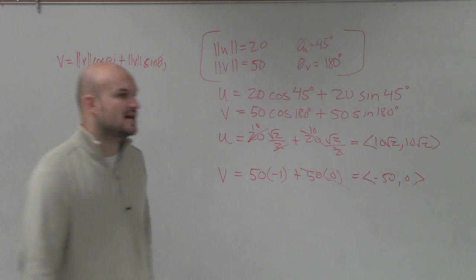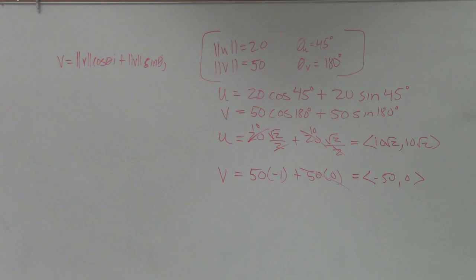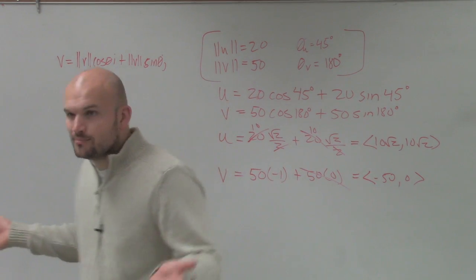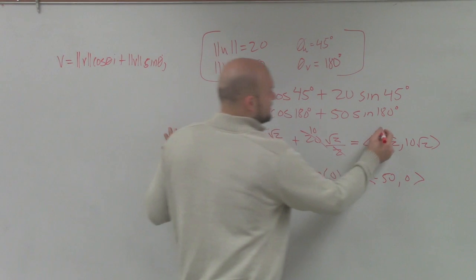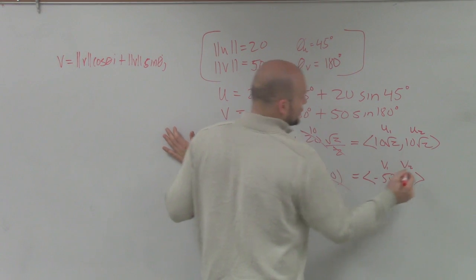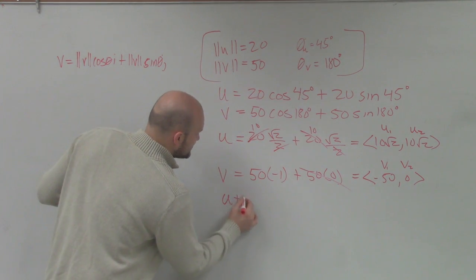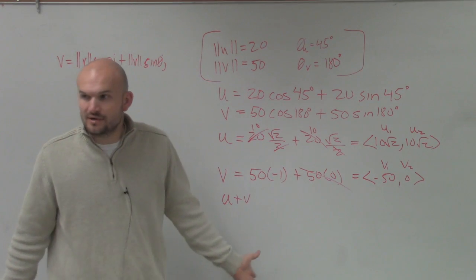So I just wrote it, instead of writing it as a linear combination with its unit vectors, I just now wrote it as far as component form. Because I like component form when adding. Because I know that component form when adding, if this is u1, u2, and this is v1, v2, to add u plus v, you just add u1 and v1, and u2 and v2, right?